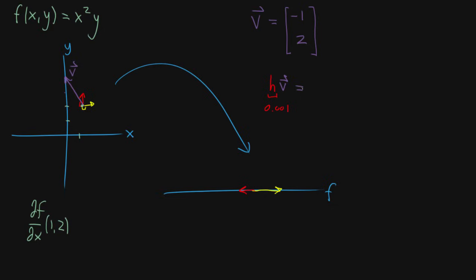One way to think about this: that slight nudge of the vector, if we expand things out and look at the definition, it'll be negative h in the x component and then 2h in the y component. So it's like you took a negative one nudge in the x direction and then two nudges in the y direction. The notation, by the way, uses the same nabla from the gradient but with the vector down here — this is the directional derivative in the direction of v. There are other notations too, but this is the one I like: nabla sub v of f, still a function of x and y. This notation is indicative of how you end up calculating it, which I'll talk about at the end of the video.